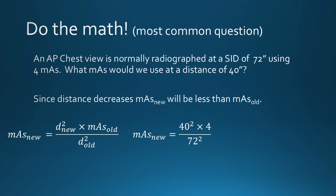Here is the equation written, and solving for the new MAS with the numbers substituted for the variables gives an answer of 1.24 MAS, which is smaller than 4 MAS. This compensates for the increase in radiation intensity seen at a shorter source-to-image distance.